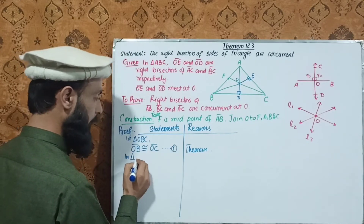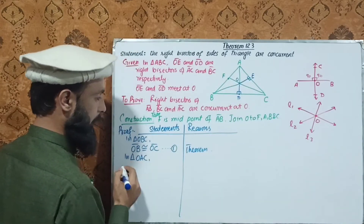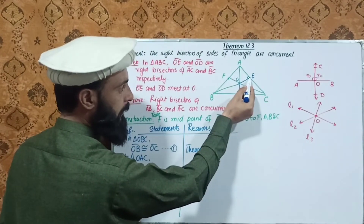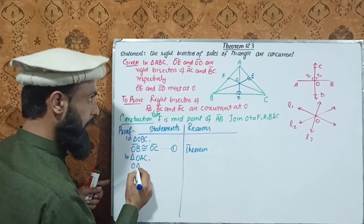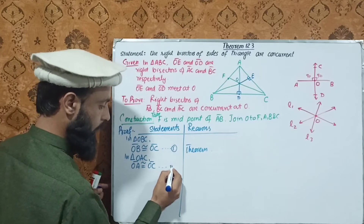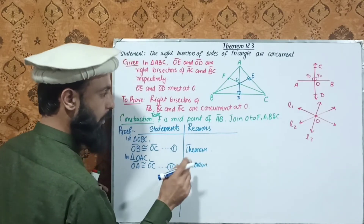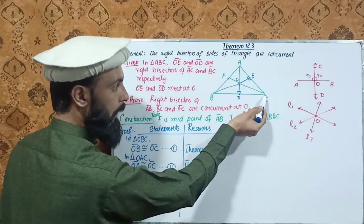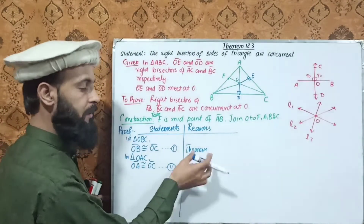Triangle OAC: since OE is the right bisector of AC, by the theorem — any point on the right bisector of a line segment is equidistant from its endpoints — we have OA equals OC.